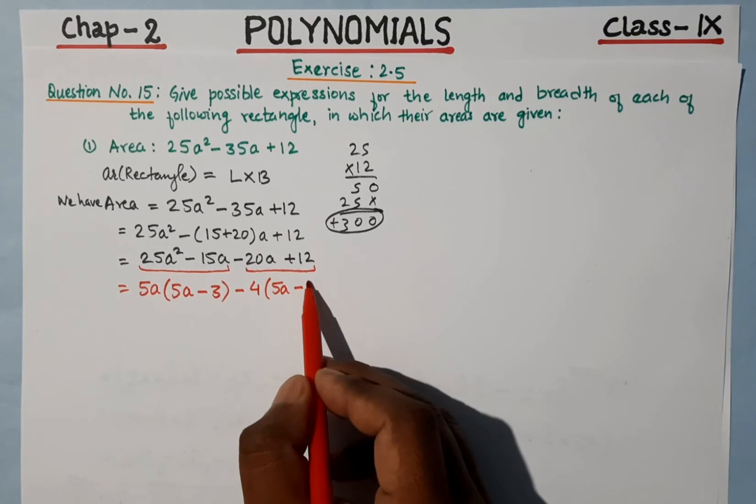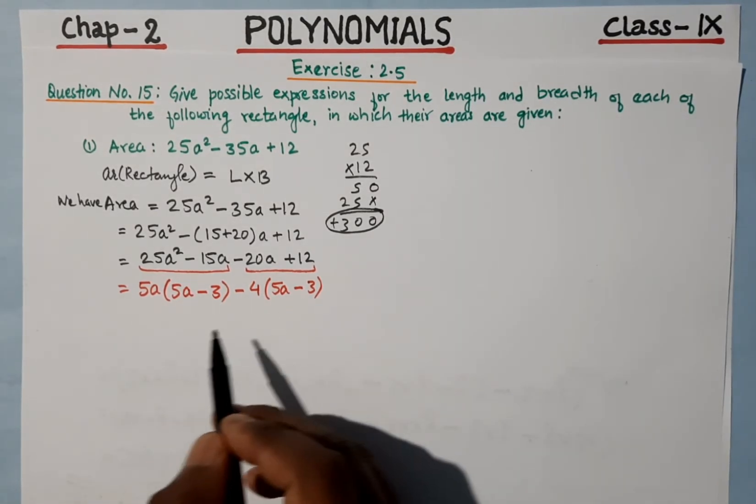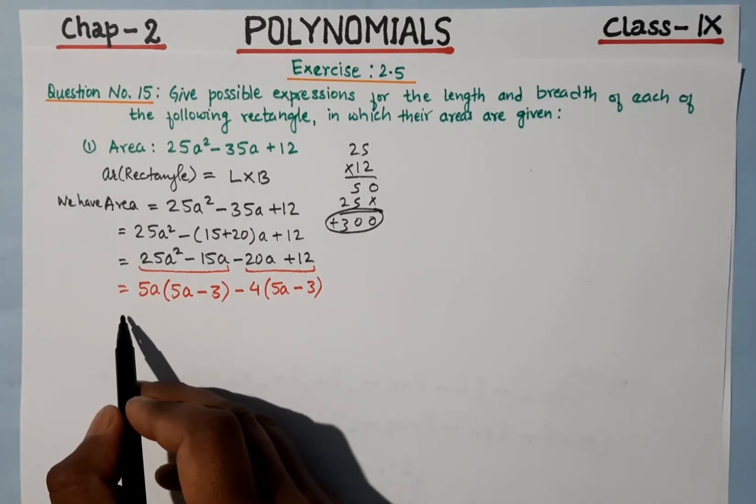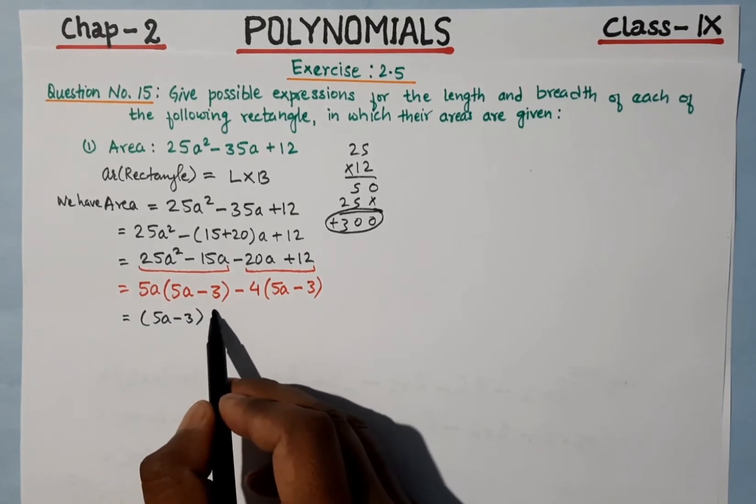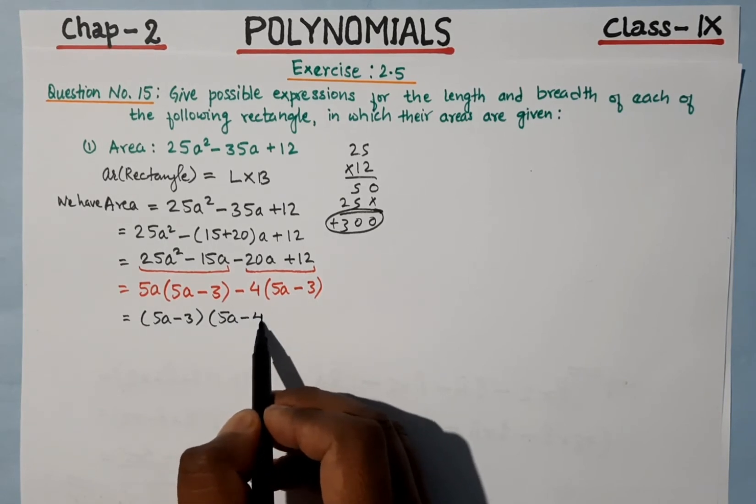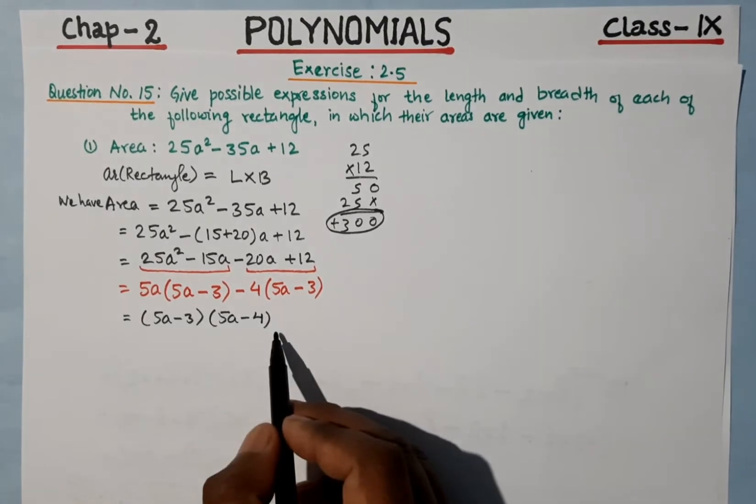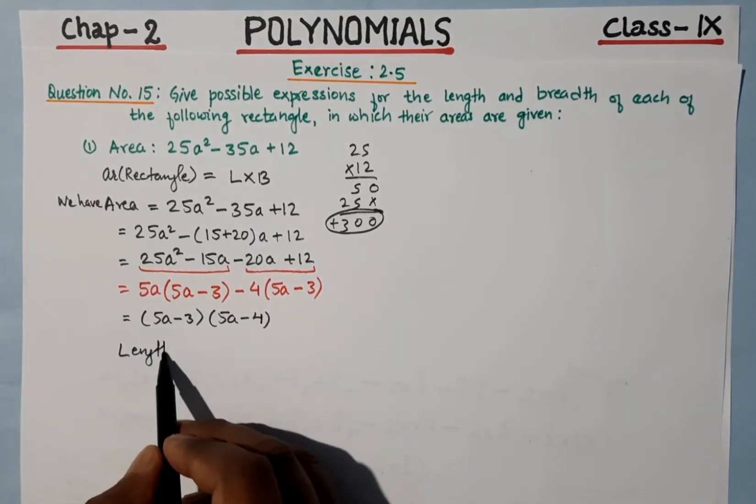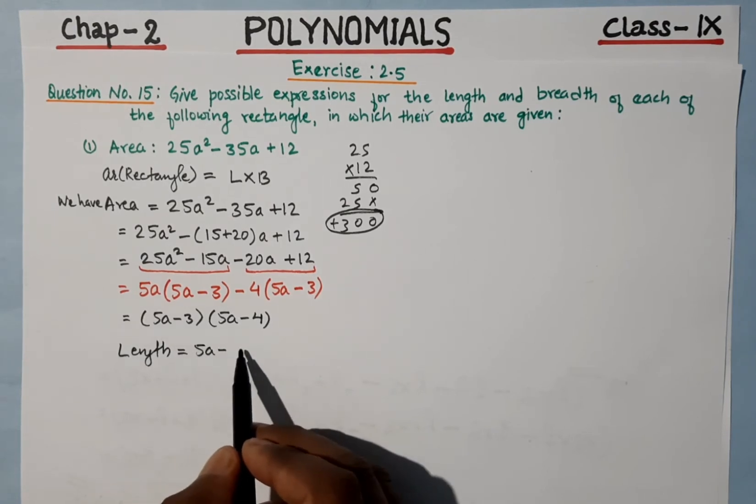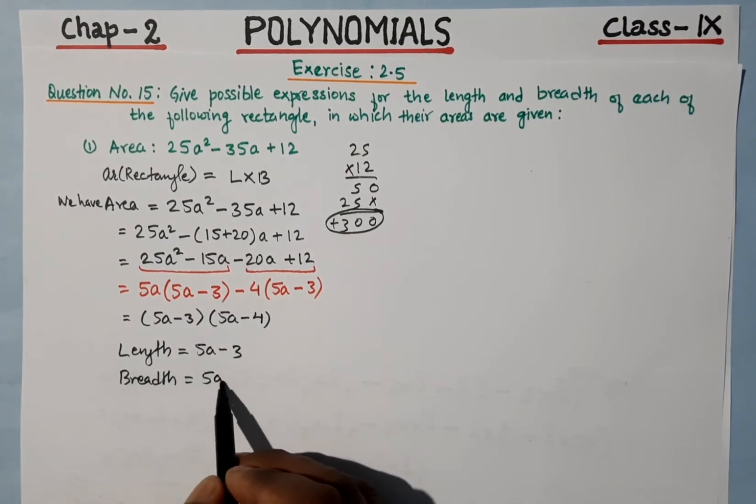From -20a and 12, the common factor is 4, giving us -4(5a - 3). When we factorize by breaking the middle term, the brackets become the same: (5a - 3)(5a - 4). This is the area of rectangle, which is length into breadth.